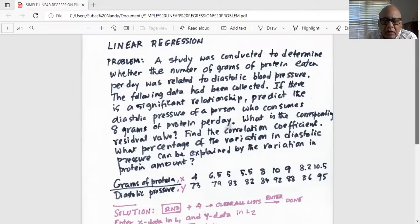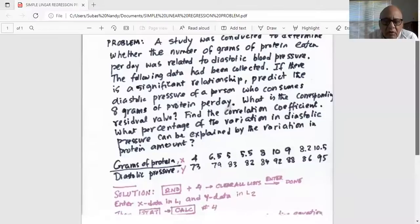If there is a significant relationship, predict the diastolic pressure of a person who consumes 8 grams of protein per day. What is the corresponding residual value? Find the correlation coefficient. What percentage of the variation in diastolic pressure can be explained by the variation in protein amount.